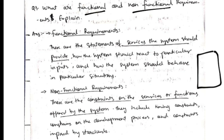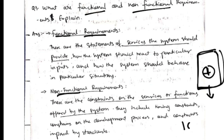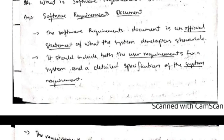Functional requirements are the functions a product provides — for example, a calculator that calculates the sum of two numbers. Non-functional requirements define the limits up to which those functions operate — for example, if the calculator only handles numbers up to 100, that limit is the non-functional requirement.